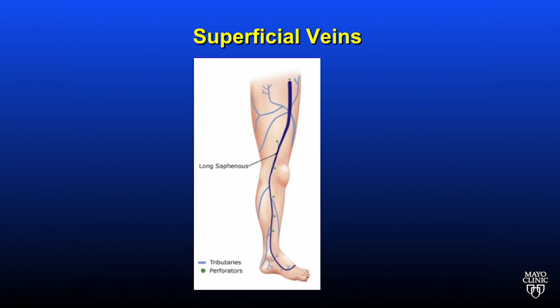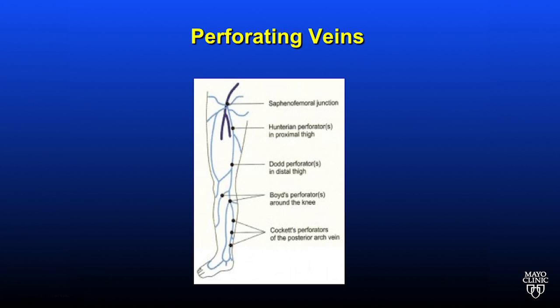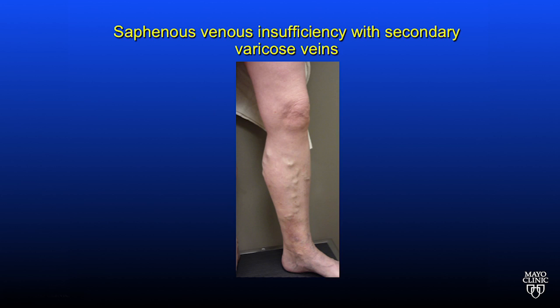As you can see here, most superficial veins begin at the long saphenous vein. In addition, perforating veins and tributary veins, which begin at the saphenous vein, can contribute to varicose veins. Saphenous insufficiency results in these secondary varicose veins,